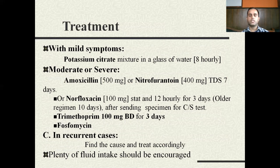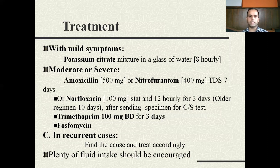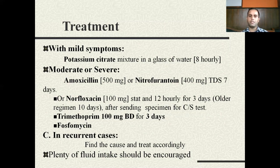For a person with mild symptoms, potassium citrate mixture in a glass of water given on an eight-hourly basis helps recovery. If the person has moderate to severe symptoms, they may need to take antibiotics. In urinary tract infections, we use either different kinds of antibiotics or a different class of drugs called urinary antiseptics. Amoxicillin, no-floxacin, trimethoprim, and phosphomycin are antibiotics used in UTIs, while nitrofurantoin is an example of a urinary antiseptic. In recurrent cases — three times per annum — it is mandatory to look into and treat the underlying cause.